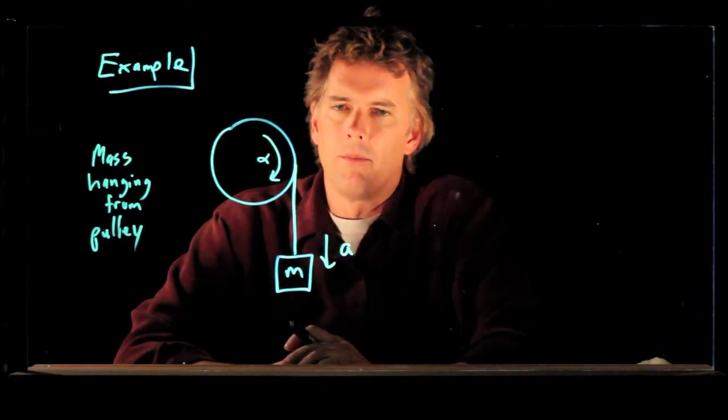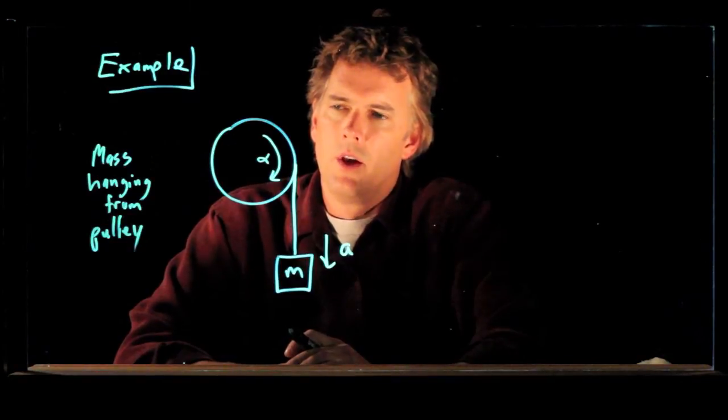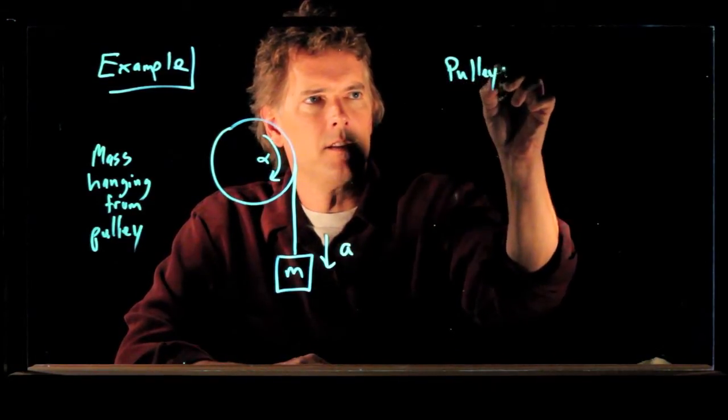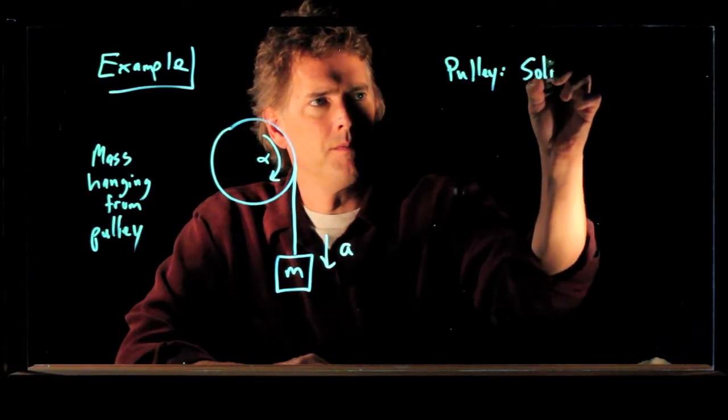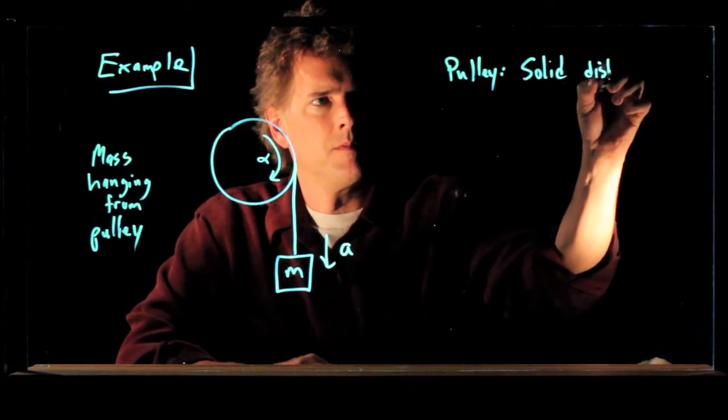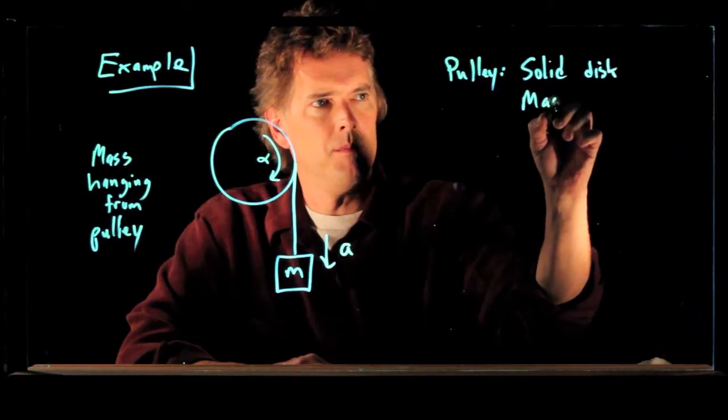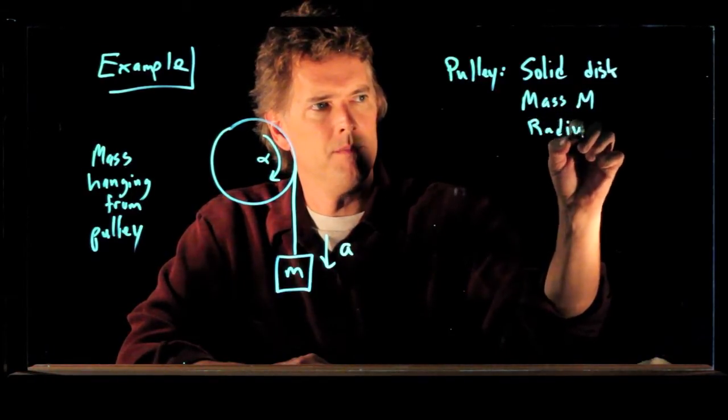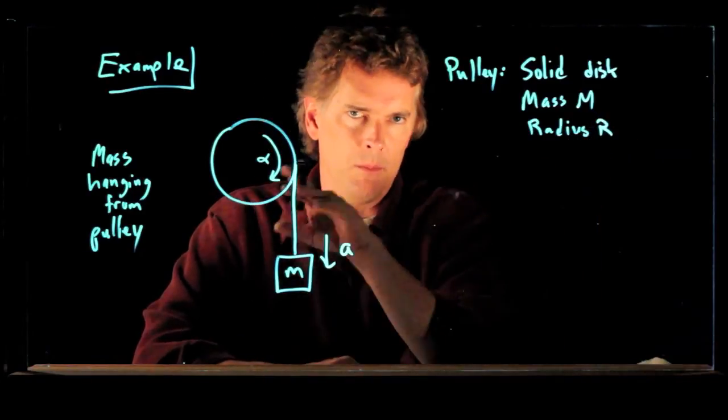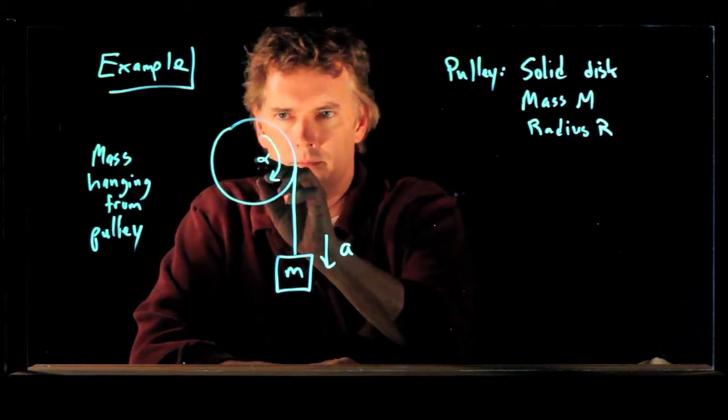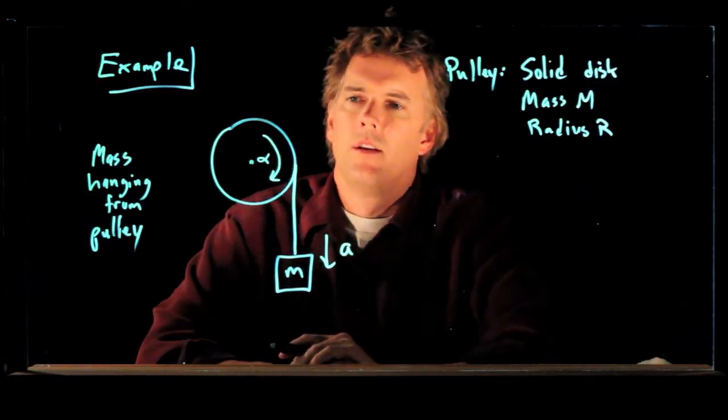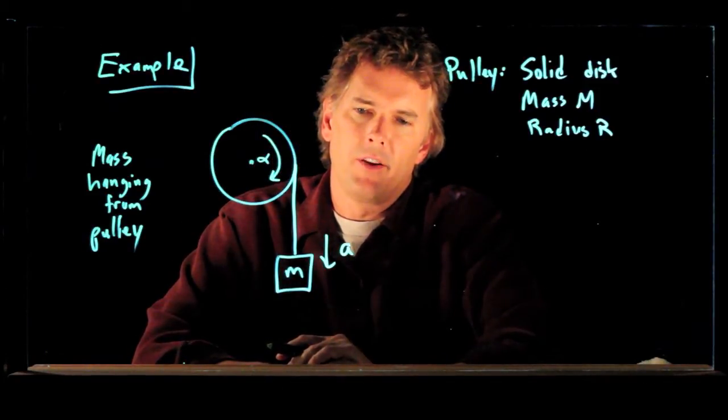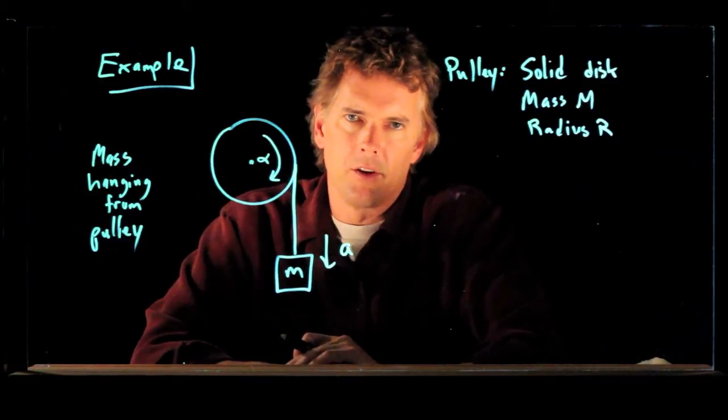Let's give you some other information. We'll say that the pulley is, in fact, a solid disc, mass M and radius R, and it moves on a frictionless axle. So that's what my picture looks like, and now we need to figure out how fast this mass is going to fall.